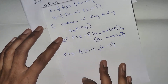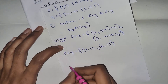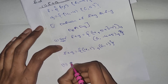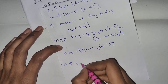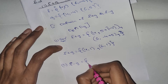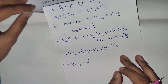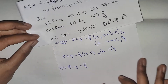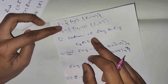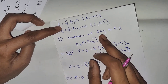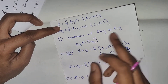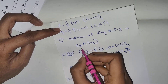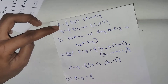Now, we have to add f plus g. We have to add 2 steps to 7. Steps to elaborate. First, we have to add domain of f plus g. This is the domain. We have to add DF intersection DG.